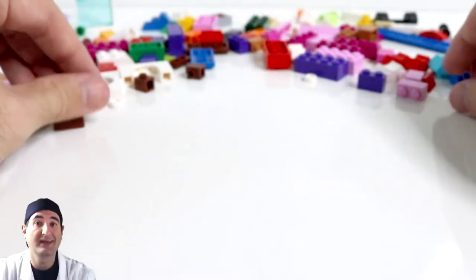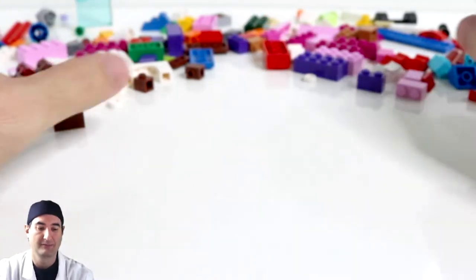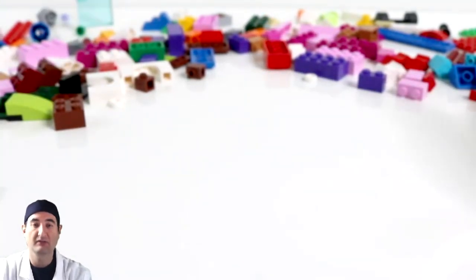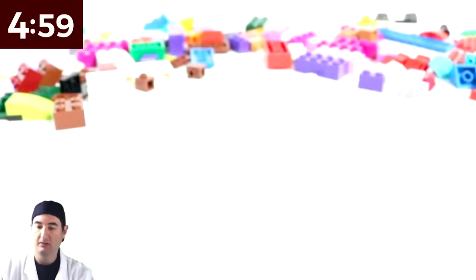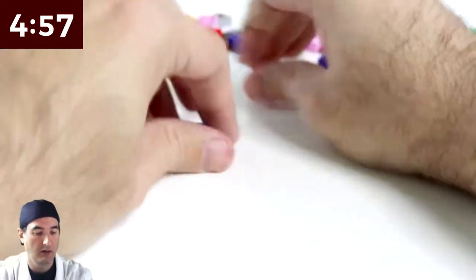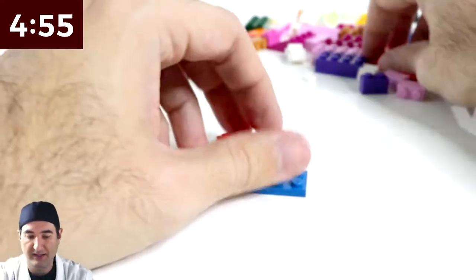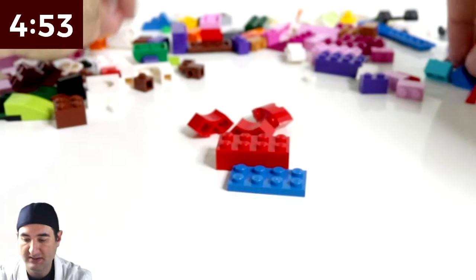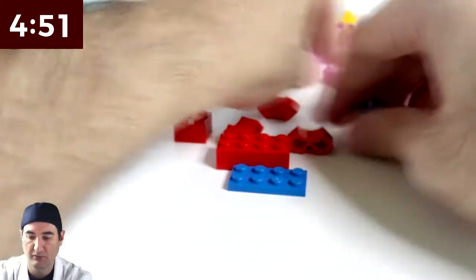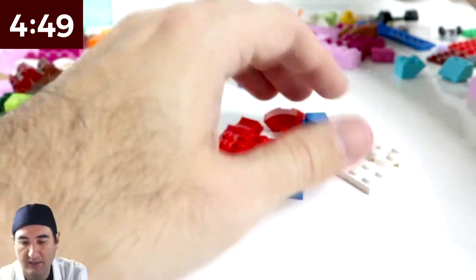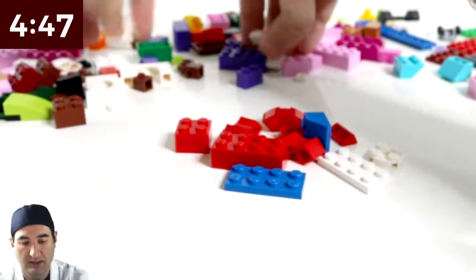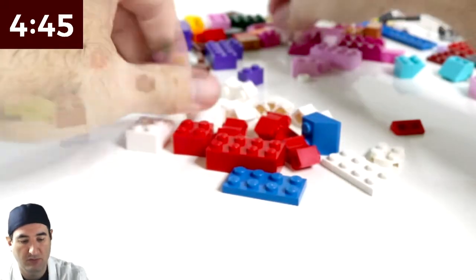So we need to build an American flag, very patriotic American flag. So let's go put five minutes on the clock and build an American flag. It's going to be kind of difficult. Let's go pull all the reds and all the blues and all the whites that we have, which is not that many. But that's what we're going to do.